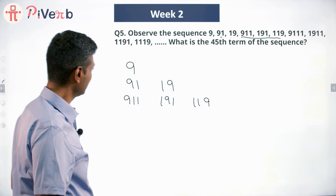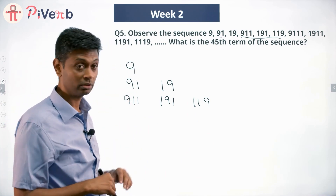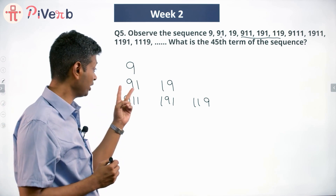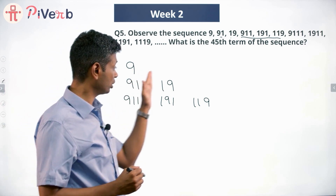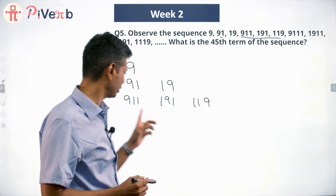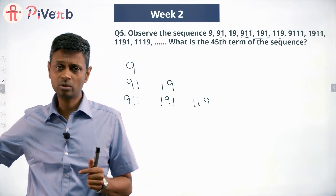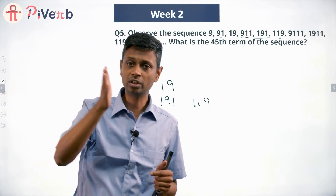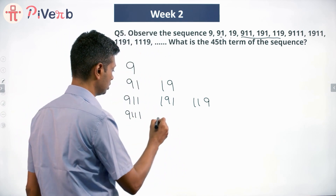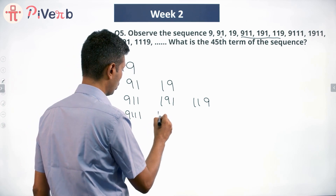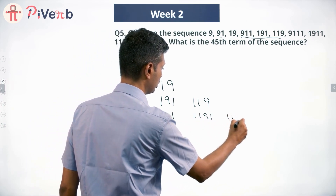I have a one-digit number 9, then a two-digit number with 9 in the first position moving to the second digit. Then 9-1-1, 1-9-1, 1-1-9 for three-digit numbers. A four-digit number would be 9-1-1-1, then 1-9-1-1, then 1-1-9-1, then 1-1-1-9.